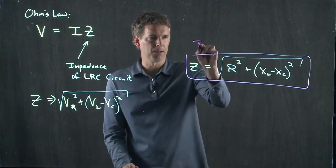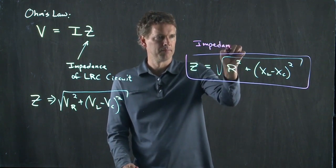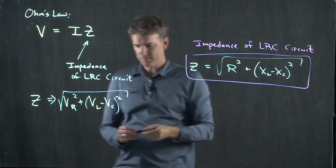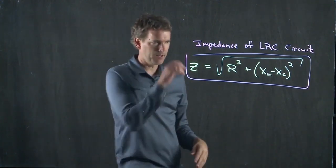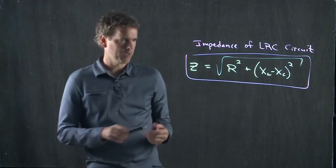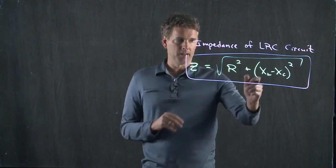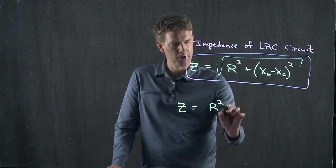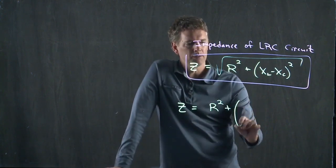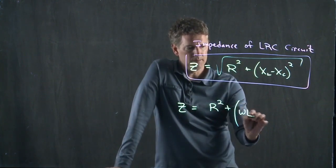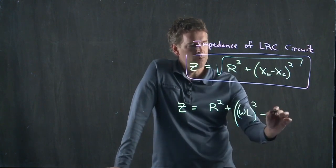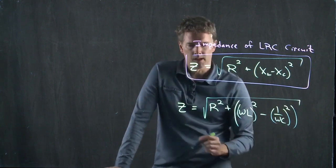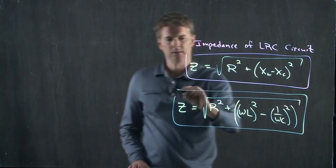That looks complicated enough, but let's make it even more complicated. We know what XL is and we know what XC is. We can rewrite this as: Z equals the square root of R squared plus (XL minus XC) squared, where XL equals omega times L, and XC equals 1 over omega times C. And this is the complex impedance of your LRC circuit.